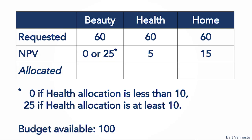Let's go back to our earlier example. We're still looking at our three businesses. Each would like to get 60, but in total we have only 100 available. This time, the return, or the NPV, for beauty depends not only on how much it gets, but also on how much health gets. If we give beauty 60 and nothing to health, the NPV for beauty is zero. If we give 60 to beauty and at least 10 to health, the NPV for beauty is 25. In other words, synergies exist between beauty and health.